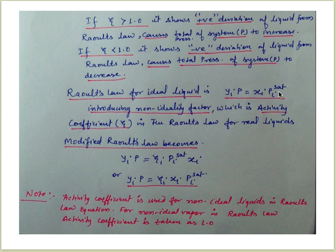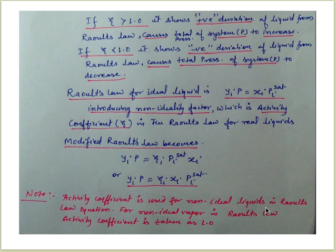Raoult's law for ideal liquid is: y_i * P = x_i * P_i_sat. Introducing the non-ideality factor — the activity coefficient gamma — into Raoult's law for real liquids, the modified Raoult's law becomes: y_i * P = gamma_i * x_i * P_i_sat.